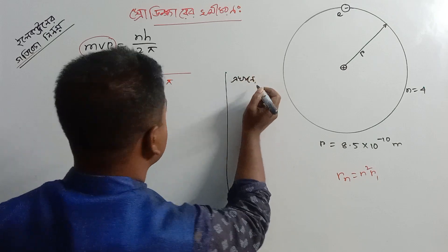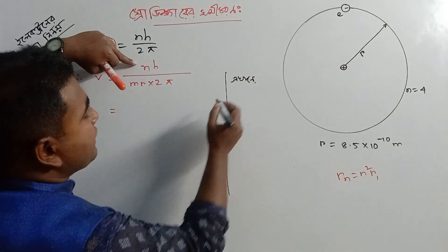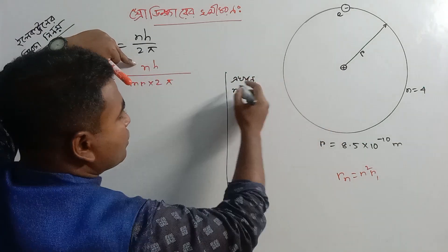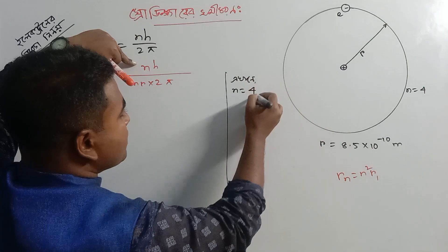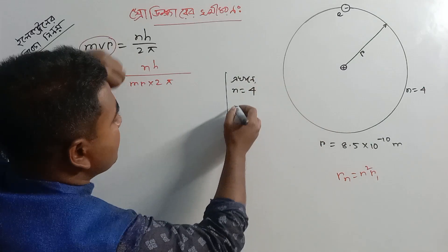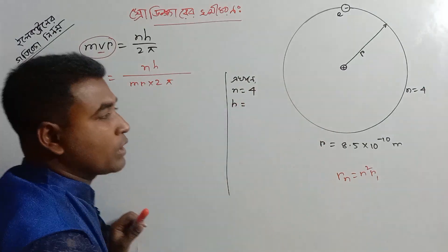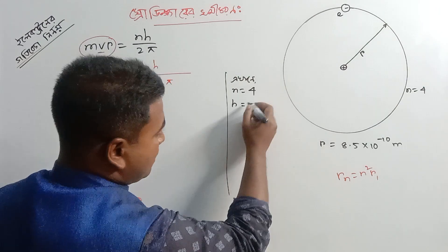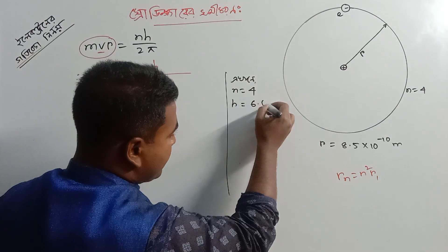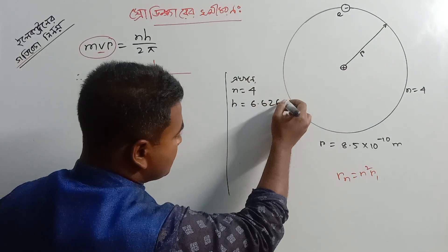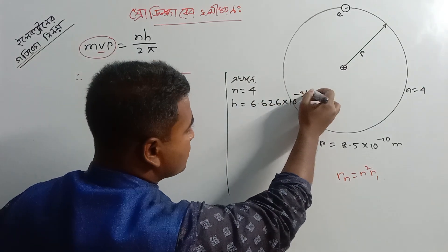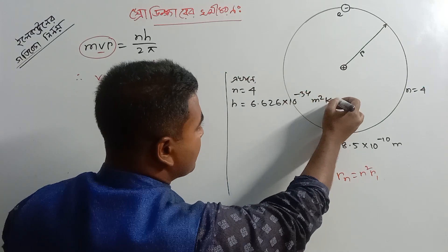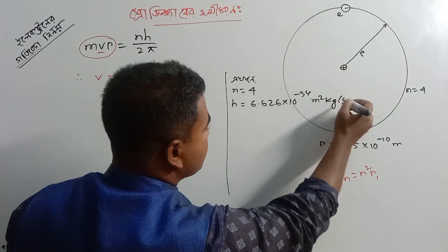This is the Planck's constant, which means 6.626 into 10 to the power minus 34 meter squared kg per second.